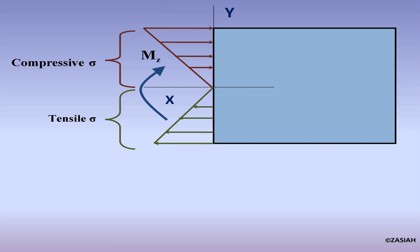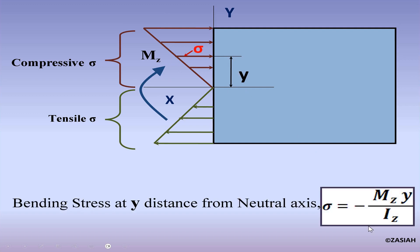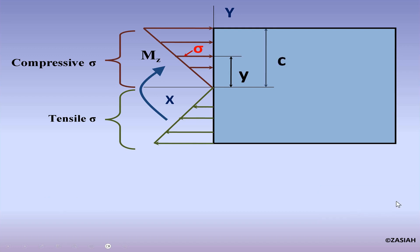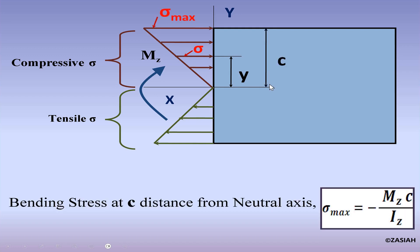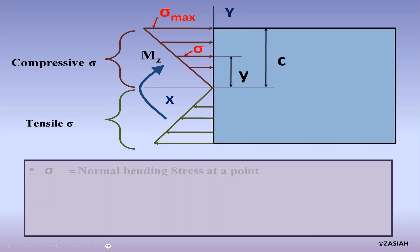The bending stress develops due to moment Mz. The bending stress at y distance from the neutral axis is σ = -Mz·y/Iz, where the negative sign indicates compressive stress. The bending stress at a distance c from the neutral axis is expressed as σmax = Mz·c/Iz.